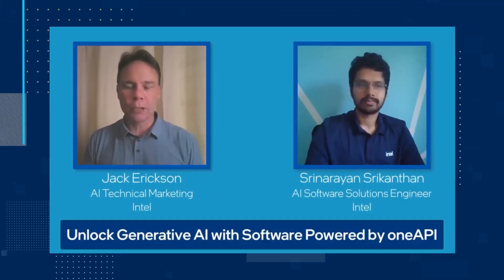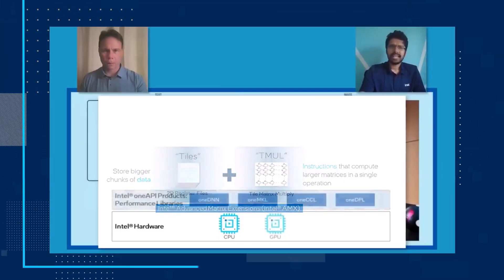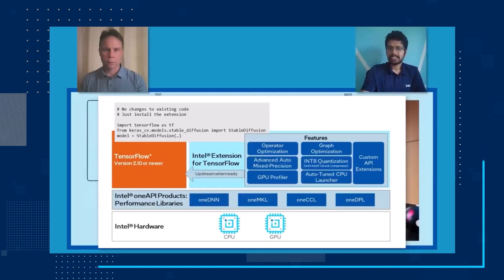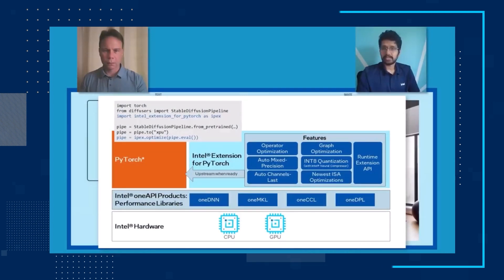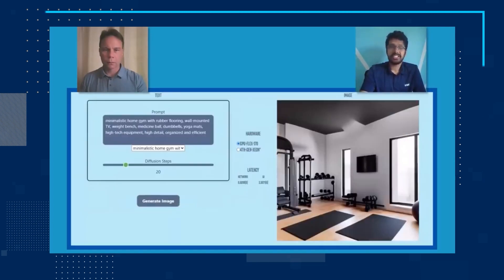AI workloads require high performance from development to deployment, often across a variety of compute environments. Intel AI software, powered by OneAPI, gets the most performance out of your Intel CPUs and GPUs, and it's supported across frameworks such as PyTorch and TensorFlow. This short demo shows Stable Diffusion, a compute-intensive text-to-image generative AI model running on a fourth-gen Intel Xeon scalable processor and an Intel Flex Series GPU, with no code changes required to switch devices.